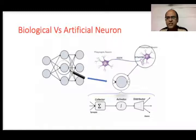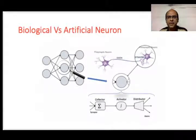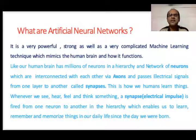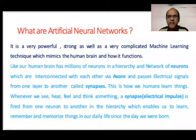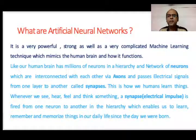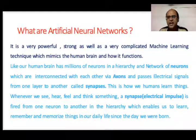Looking at the different parts of a neuron, you have the collector, the activator, and the distributor. An artificial neural network, otherwise termed ANN, is a highly powerful ML technique that can mimic the human brain. The biological neuron consists of millions of neurons interconnected via the axon, passing electrical signals from one layer to another — that is called the synapse.